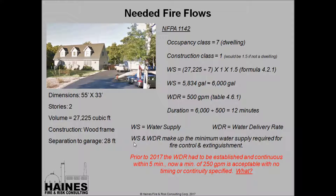The WS and WDR of the NFPA 1142 method are defined as the minimum water supply required for fire control and extinguishment. Prior to 2017, the water delivery rate had to be established and continuous within five minutes of the first apparatus arriving on scene. In 2017, the committee changed this to just a minimum of 250 GPM with no timing or continuity specified. I think they've essentially said that it's okay to be at ISO 9 and be happy with it.